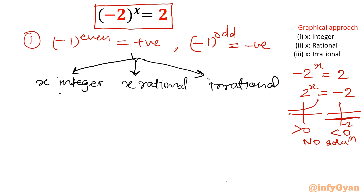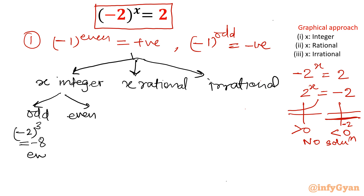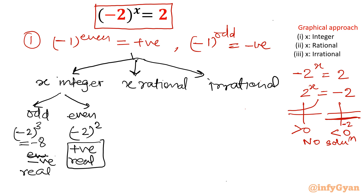Now x is an integer. We consider whether it is odd or even. If it is an odd integer — for example (-2)^1 or (-2)^3 — the answer will always be negative. So in this case we get always a negative but real value. For an even integer, for example (-2)^2, that will always be positive and a real value. No constraint, no issue.